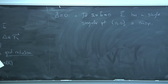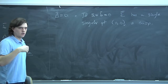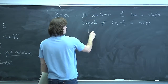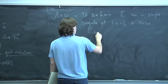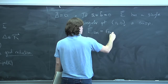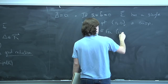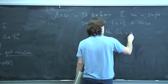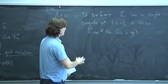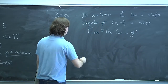Ē looks like ℙ¹ but with one point made into a cusp singularity. When you remove that point you have 𝔸¹. The smooth locus is isomorphic to 𝔾_a as a group. Because of that, we say that E has additive reduction in this case.